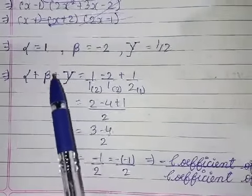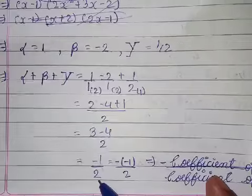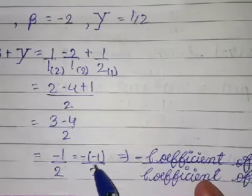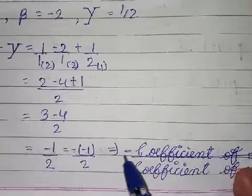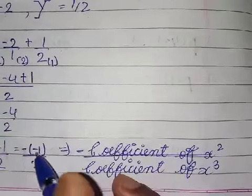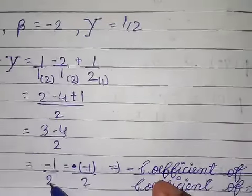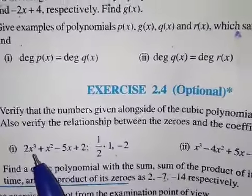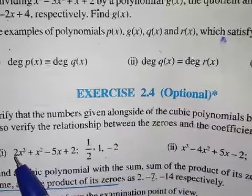Now we have to verify the relation. The zeros are alpha, beta, gamma. If you add them — alpha plus beta plus gamma — simplifying, you will get minus 1 upon 2. Minus 1 is the coefficient of x square, and 2 is the coefficient of x cube. So the sum equals minus coefficient of x square upon coefficient of x cube, which is minus b upon a.